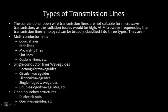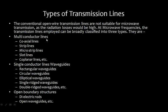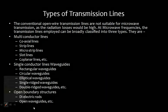We'll start our session with an introduction to the types of transmission lines. Transmission lines are categorized into three categories. A transmission line is a physical media which carries an electromagnetic signal from one point to another. The first category is the multi-conductor line, where we have more than one conductor. Multi-conductor lines support the TEM mode.